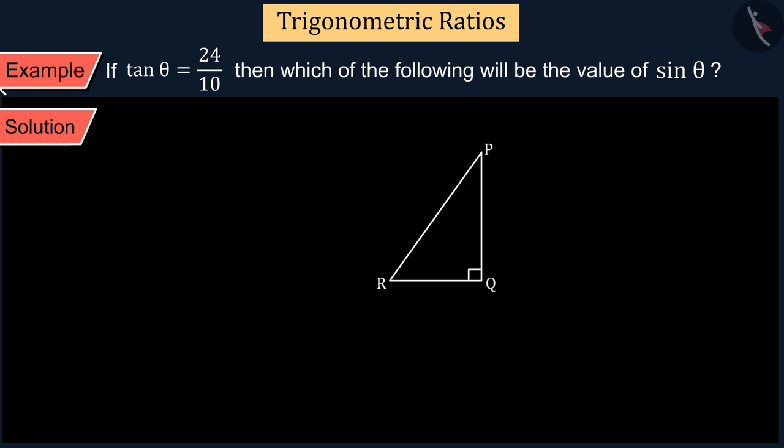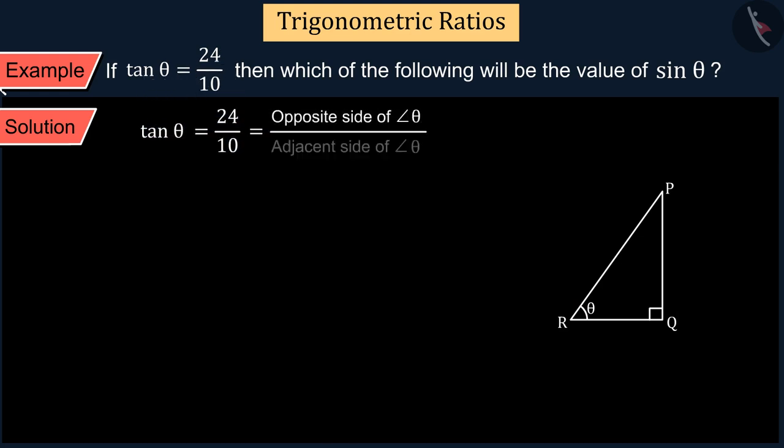Draw a right angle triangle called PQR in which angle Q is right angle and angle R is θ. We know that the trigonometric ratio tan of the angle θ is equal to the ratio of opposite side to the adjacent side of the angle.